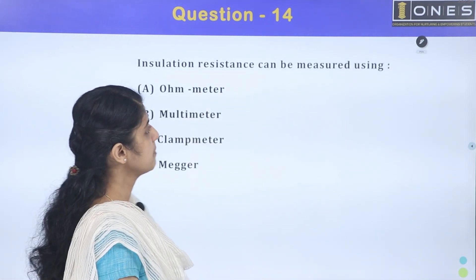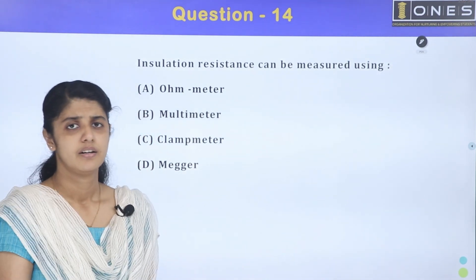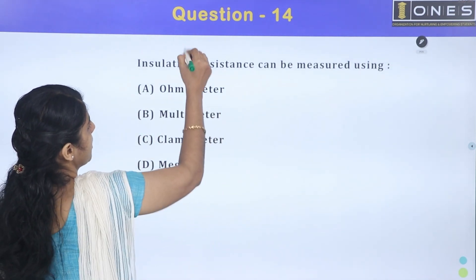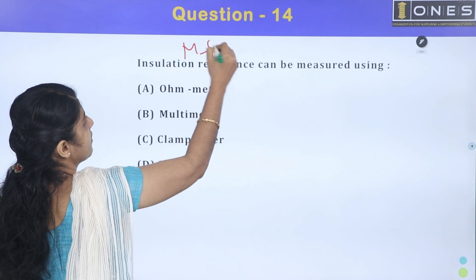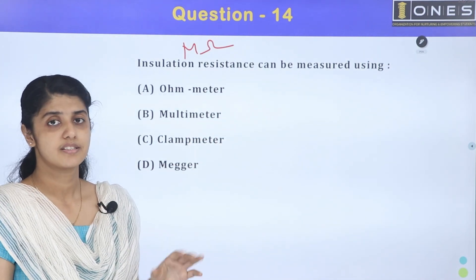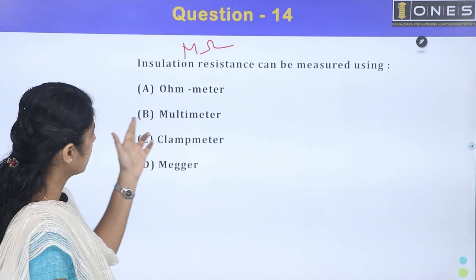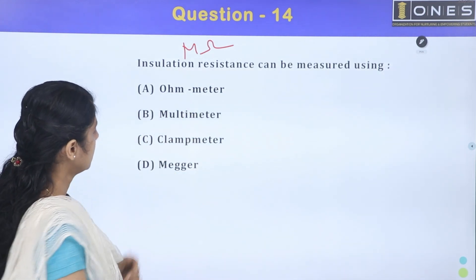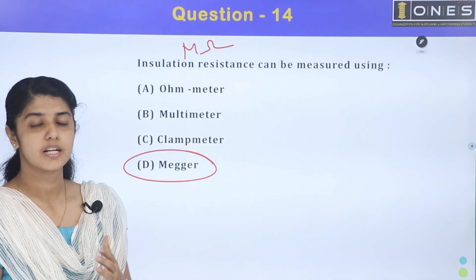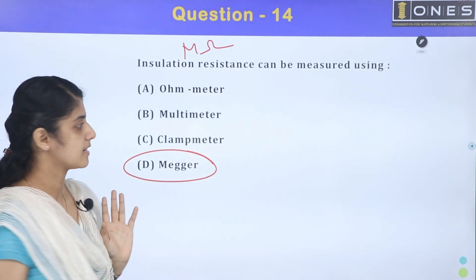Next question: Insulation resistance can be measured using a megaohmmeter (Megger). Megohmmeters are used for measuring high resistances like insulation resistance.